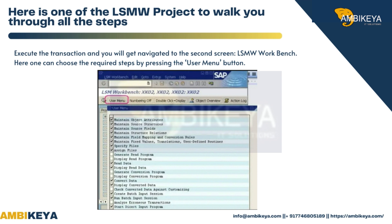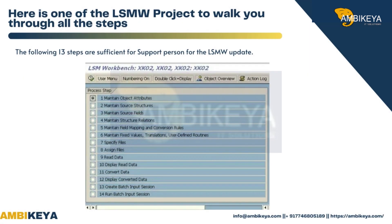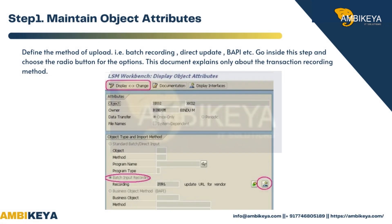The following 13 steps are sufficient for a support person for the LSMW update. Step 1: Maintain Object Attributes — define the method of upload, i.e., batch recording, direct update, BAPI, etc. Go inside this step and choose the radio button for the options.